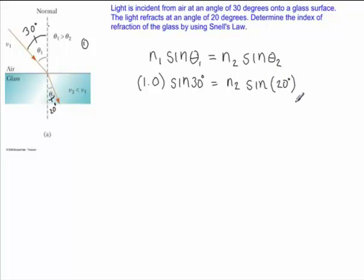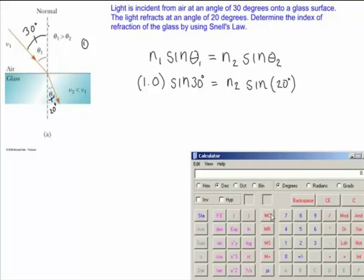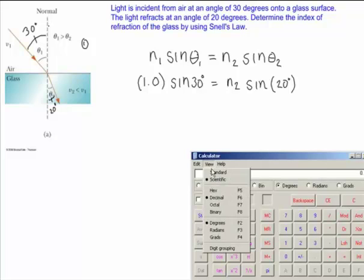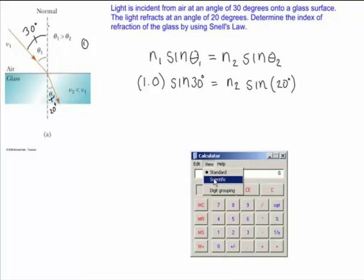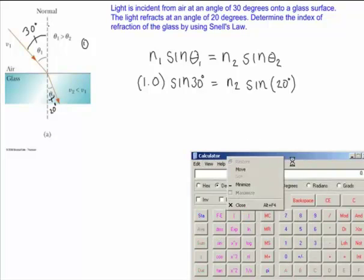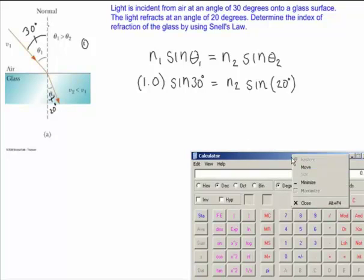So at this point, we need to use our calculator to determine sine of 30 degrees and sine of 20 degrees. And so you can use your calculator on your computer. Remember that you can change the view from standard to scientific. This is just a normal calculator that comes with office or with your operating system.